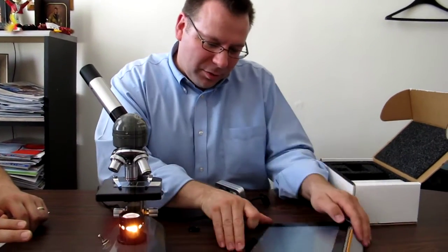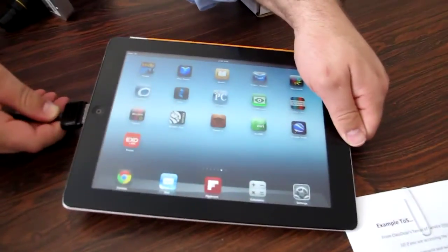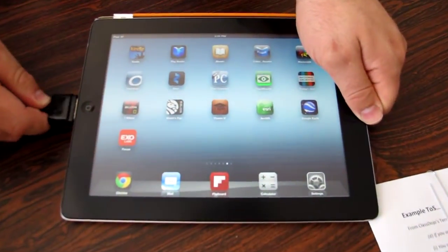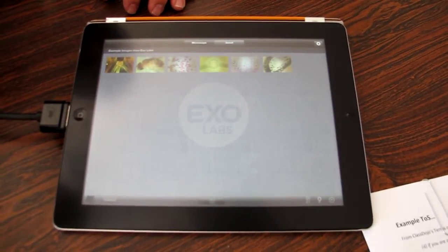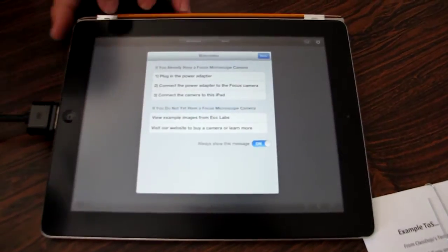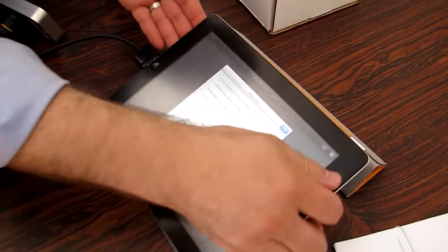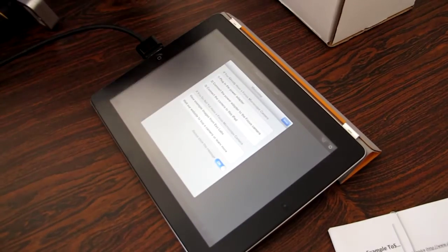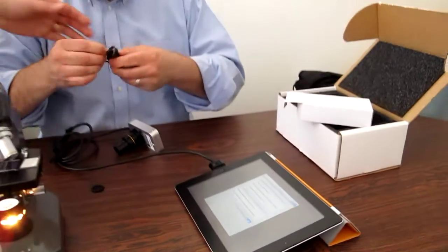I did install already the XO Focus camera app, all right. So we're gonna plug this in and see what happens. Okay, and we'll open up the app. Okay, so microscope, okay. Plug in the power adapter. Full power adapter. You got to do one more. That must be this other piece here.